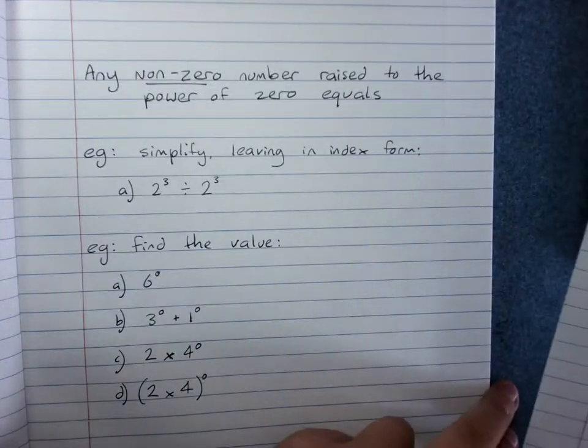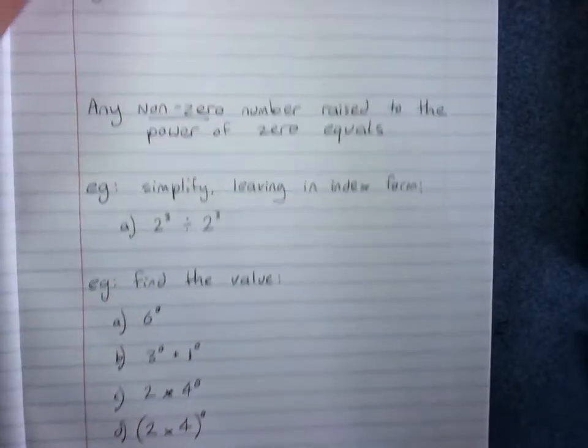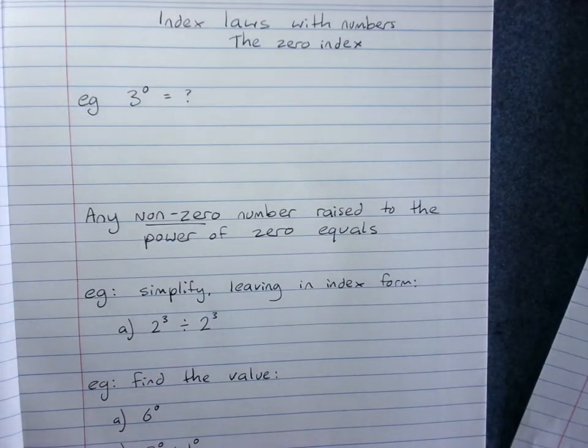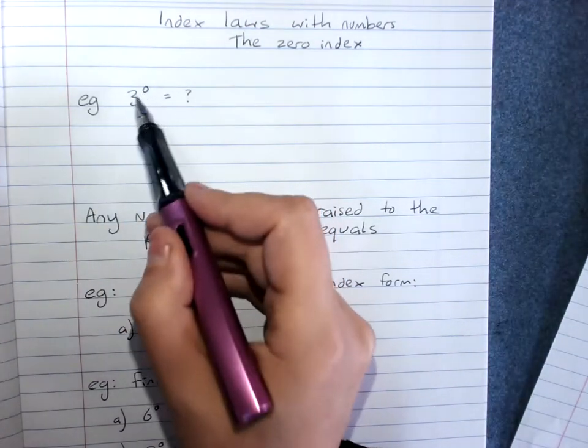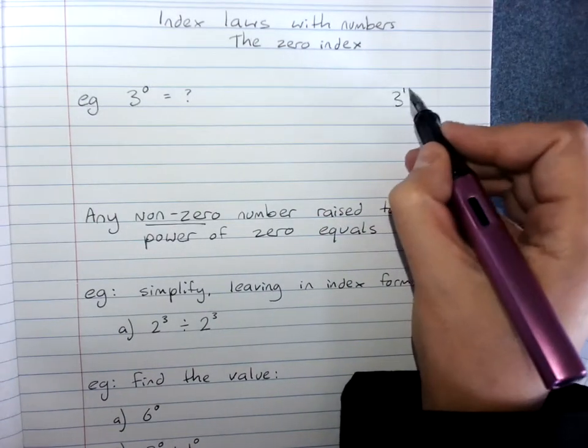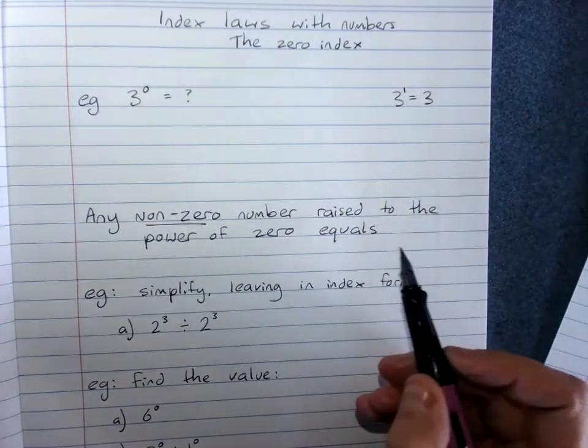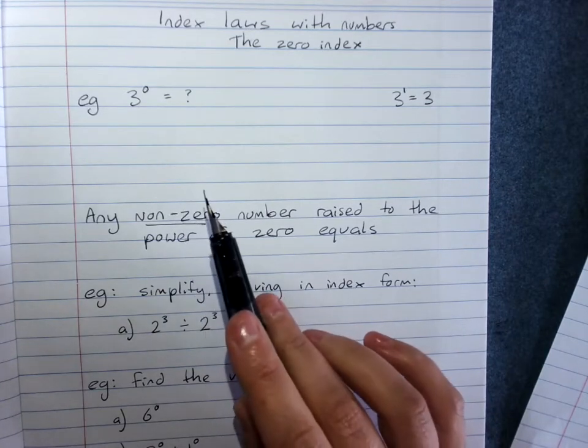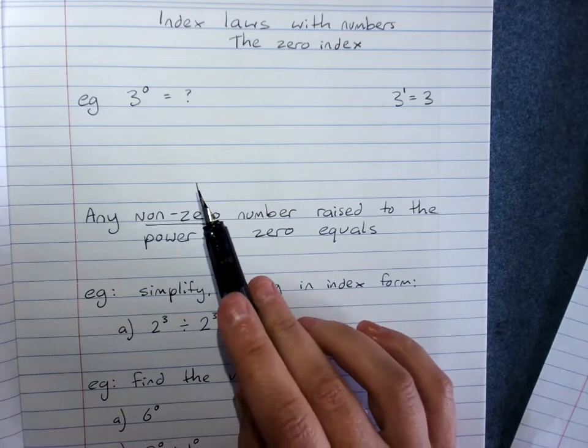We also need to look at the zero index. Something to the power of 0. We already know that anything to the power of 1 is just itself, so we've got to work out what 3 to the power of 0 is. Now I'm going to tell you, it's 1.